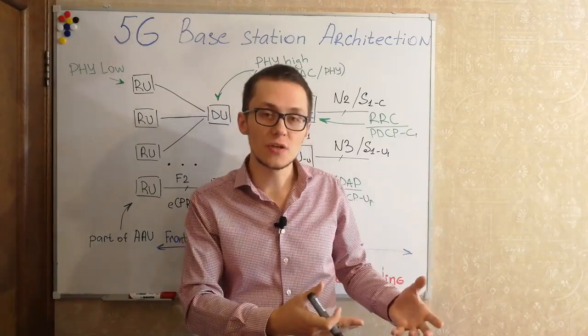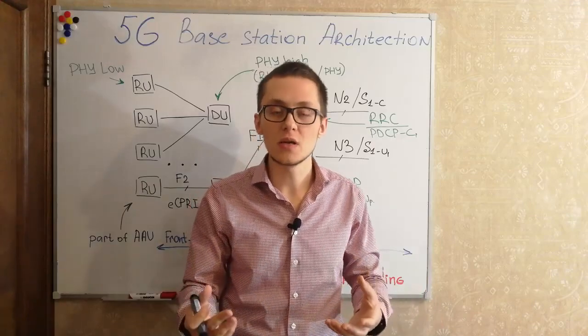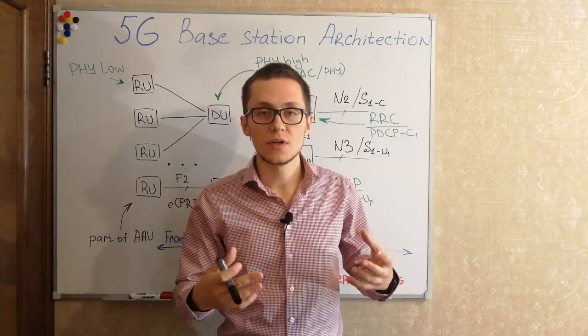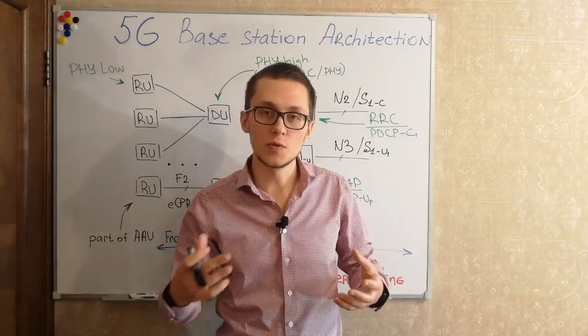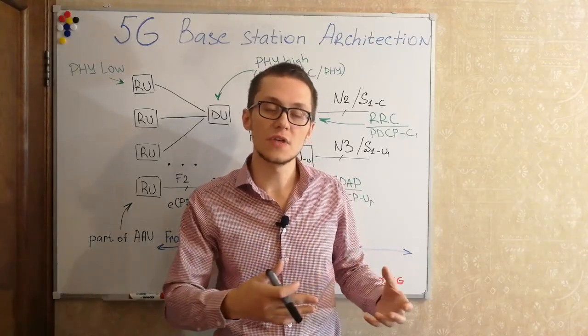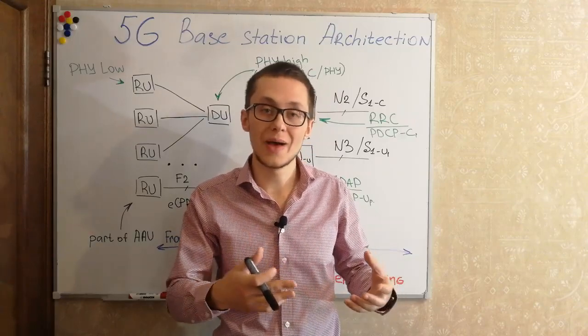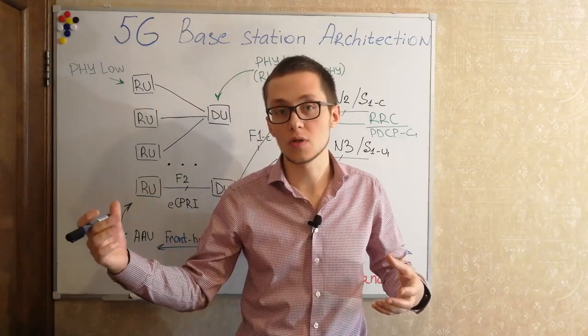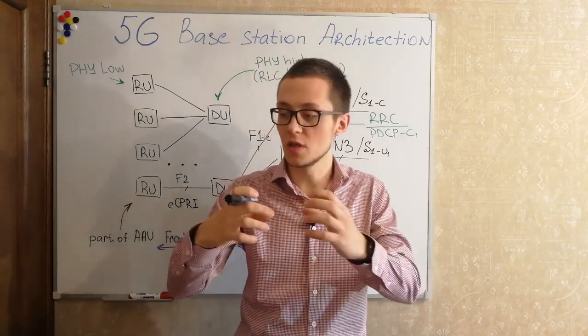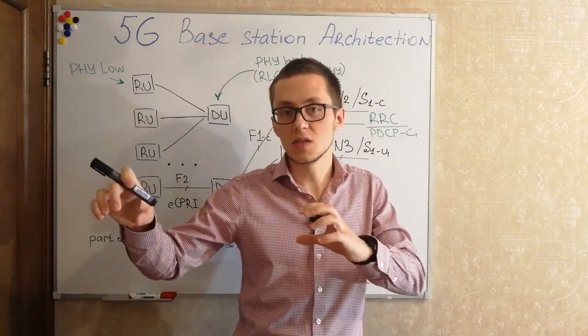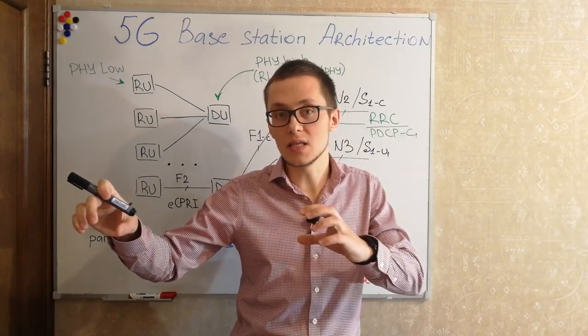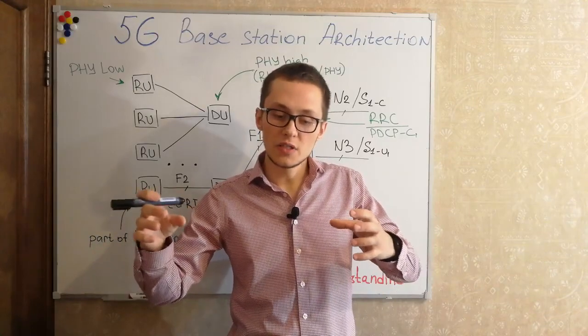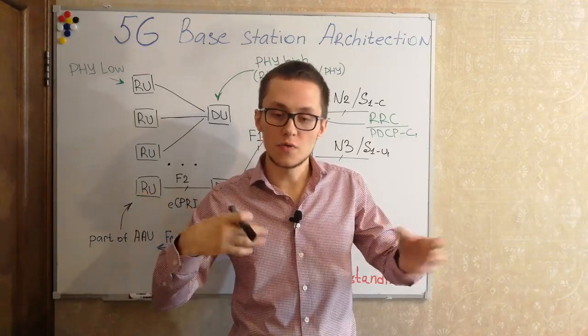When it comes to 3G, 3G node B was only kind of a layer 2 base station, only physical layer and MAC. Other protocols, the radio protocols and part of MAC protocols, even terminate into RNC controller and RNC handles all of these radio protocols in 3G.